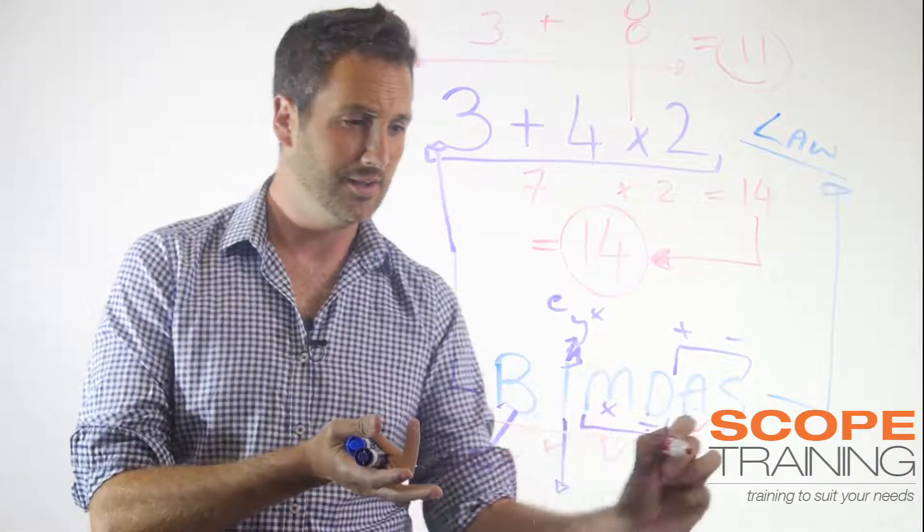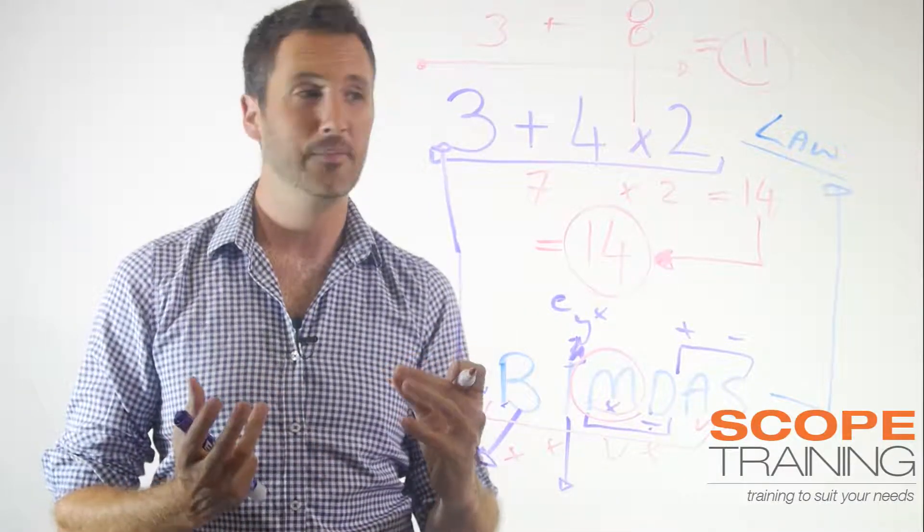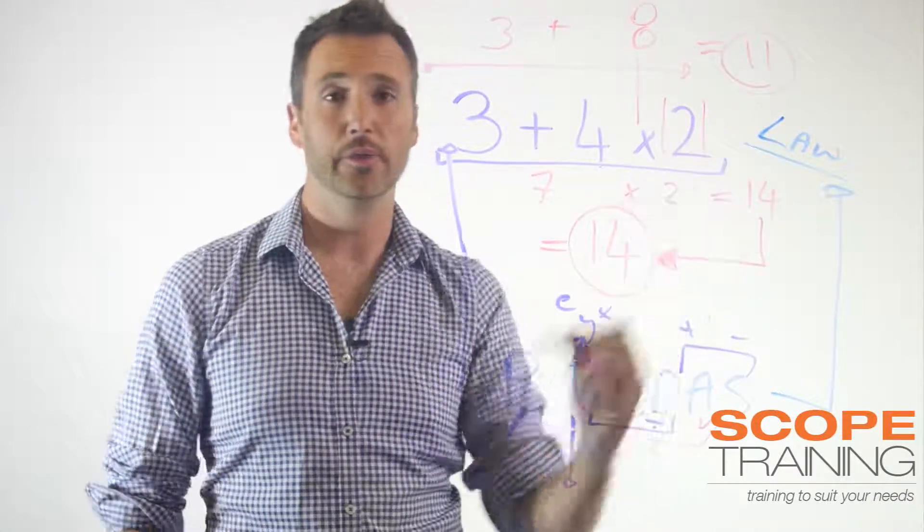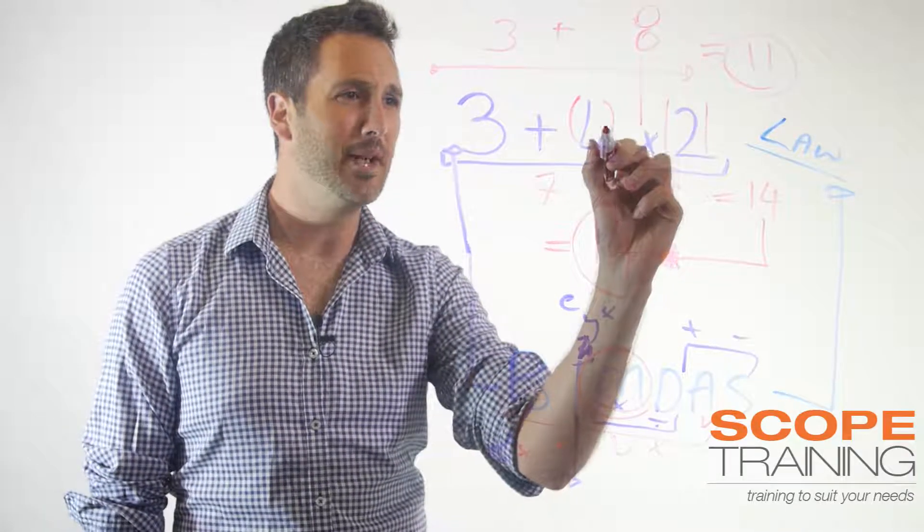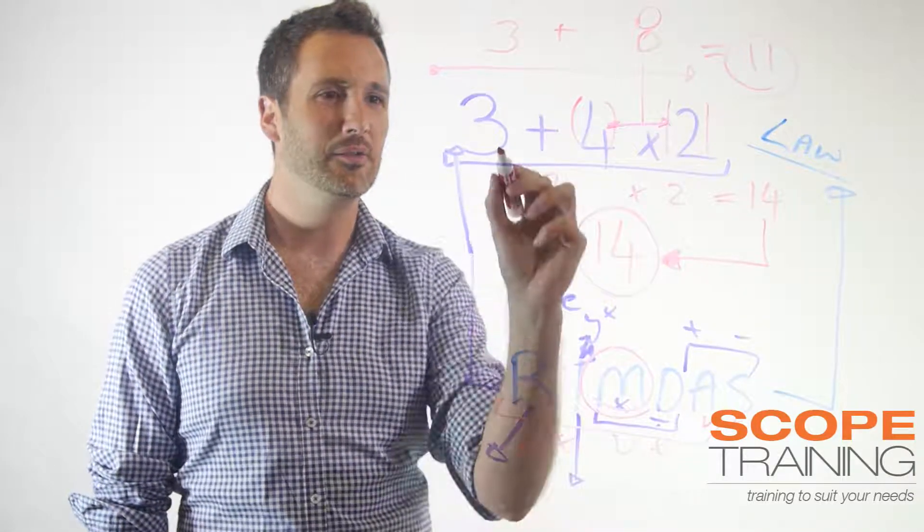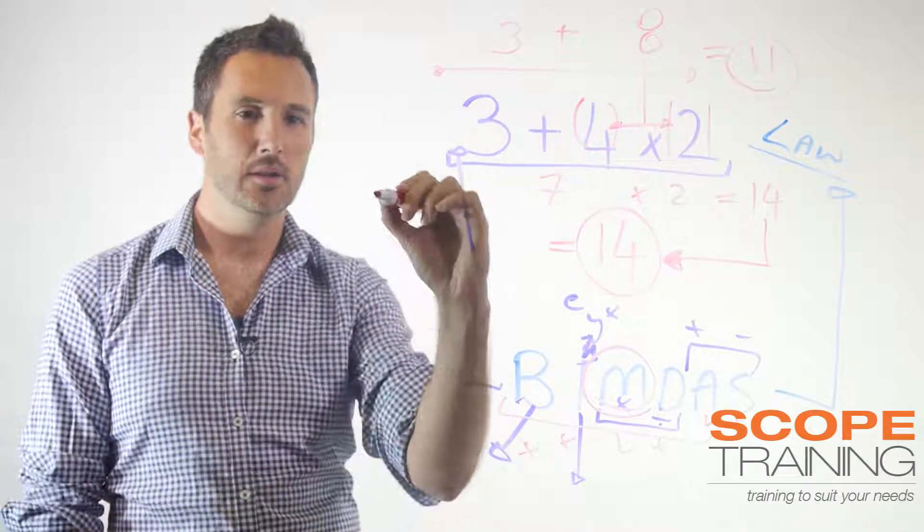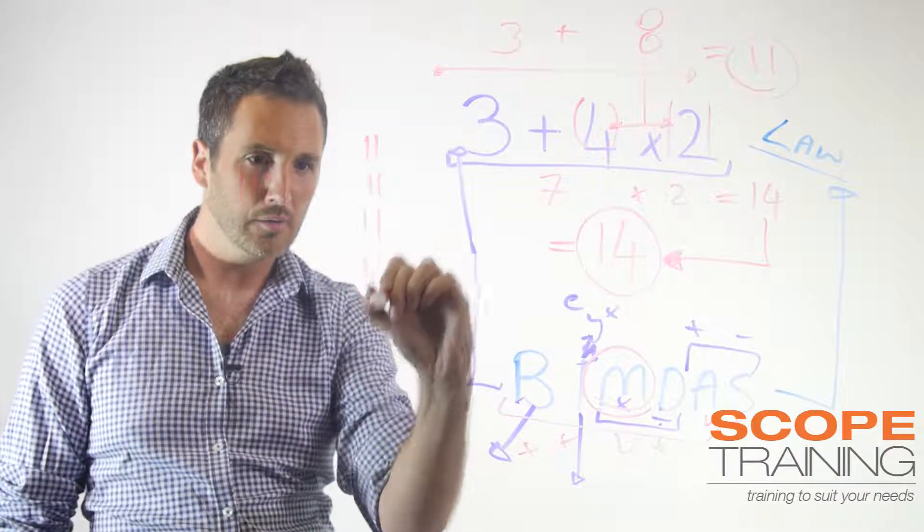Because in this case, multiplication is just grouping stuff. So here what you're saying is you've got 4 lots of 2, right? So this number really isn't independent of this number—they're linked. So if you go, okay, well I've got 1, 2, 3 things here, and over here I've got 1, 2, 3, 4 lots of 2.